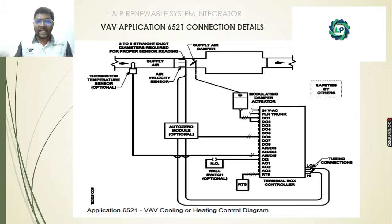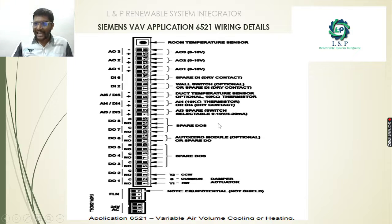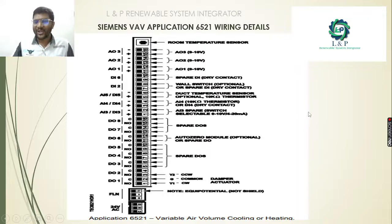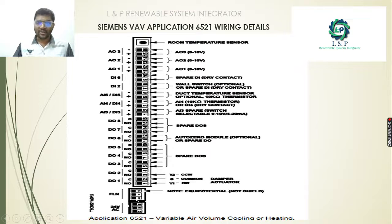Connect the room temperature sensor to the RTS ports, and if you have air velocity sensor tubes, connect them to the tubing connections. For input signals, there is a selectable switch inside these controllers to switch between 0–10V and 4–20mA. If you are choosing a 0–10V temperature sensor, connect it directly and ensure the selector switch for analog input selection is in the correct position. If you plan to use a 4–20mA sensor, change the selector switch accordingly. Other connections include 24V AC, communication wiring, damper actuator connections, and most importantly the duct temperature sensors.